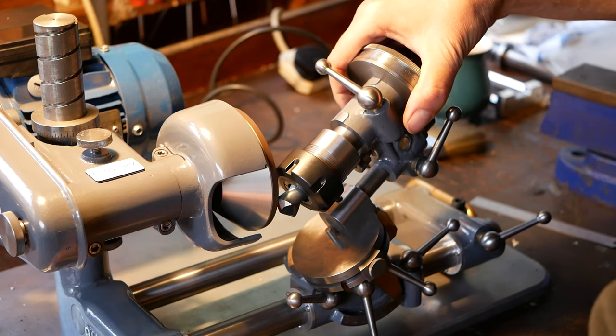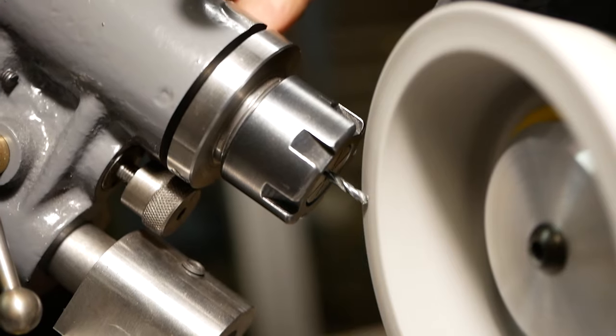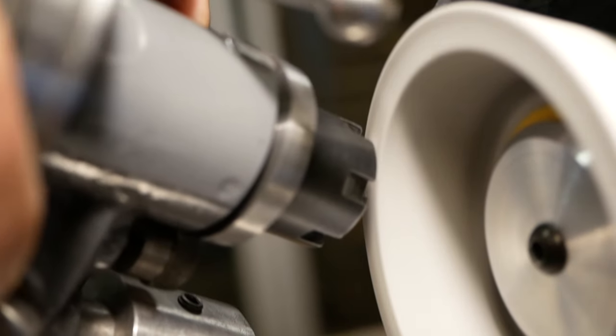On the other end of the spectrum, small drills can be ground. Here Alistair is grinding a 2mm drill bit.